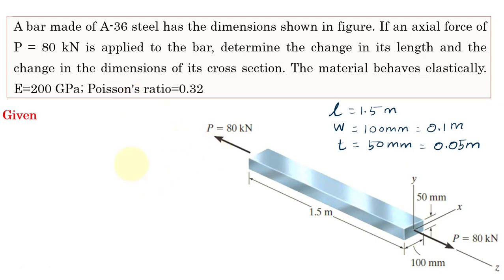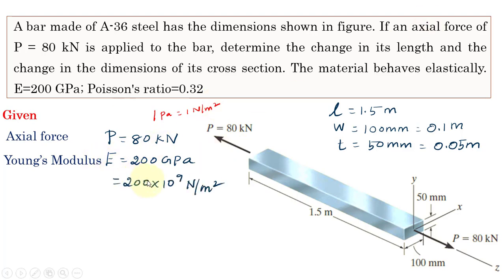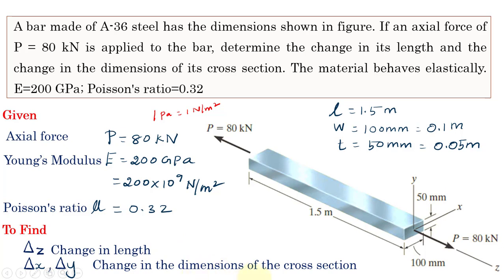Let us solve the problem. The axial force is 80 kN. Young's modulus is 200 GPa — recall that 1 GPa equals 10 to the power of 9 Pascals, and 1 Pascal equals 1 N per meter squared, so Young's modulus is 200 × 10⁹ N/m². Poisson's ratio is 0.32. We are asked to calculate the change in dimension along the Z axis (change in length) and changes along the cross section — del x and del y.